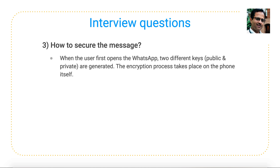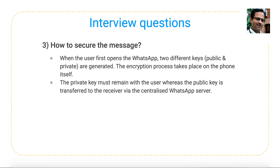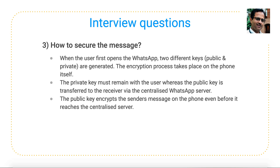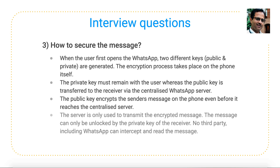The third question is: how to secure messages? In applications like WhatsApp, if you want to encrypt messages, the user's device generates two keys — a public key and a private key. The encryption process takes place on the phone itself. The private key stays on the user's device, and the public key is transferred to the receiver. The public key encrypts the sender's message on the phone before it reaches the centralized server. The server only transmits the encrypted message. The message can only be unlocked by the receiver's private key, so no third party — not even WhatsApp — can intercept or decrypt the messages.